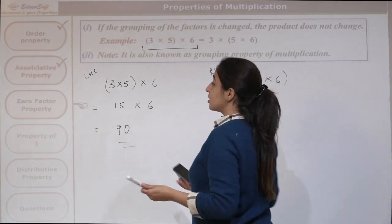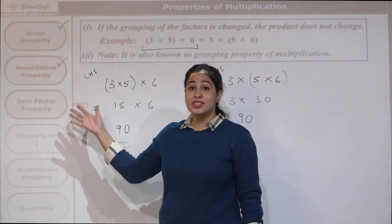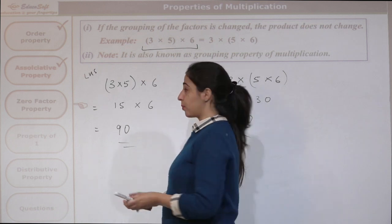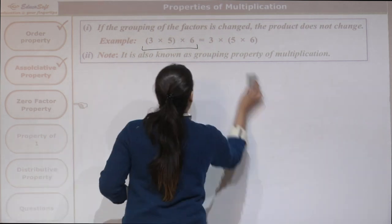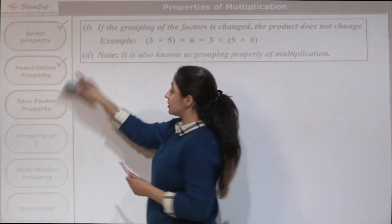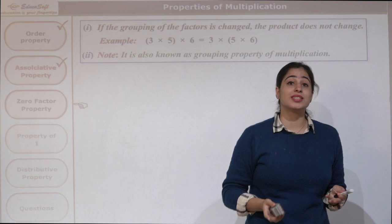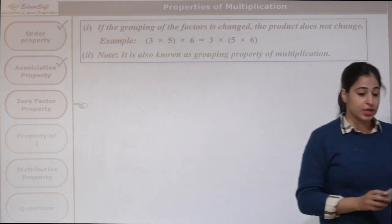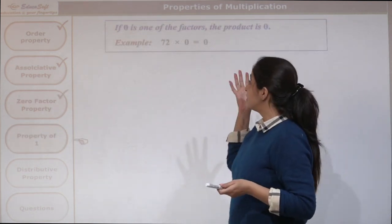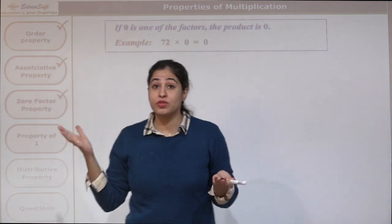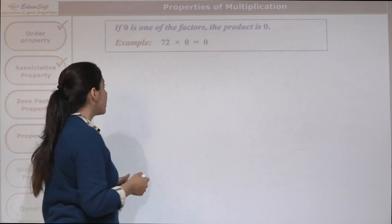Now let's look at the third property, which is the zero factor property. What does that say? As the name suggests, one of the factors is going to be 0. So if 0 is one of the factors, what happens to the product?